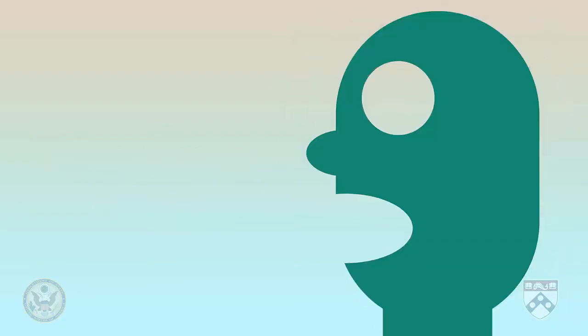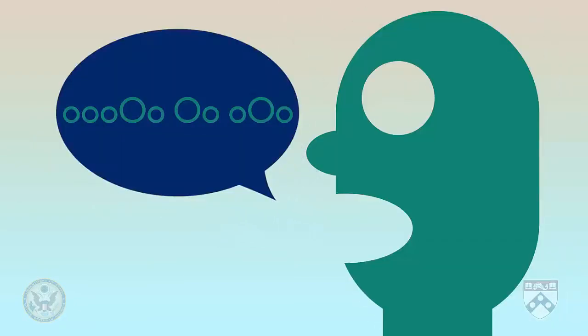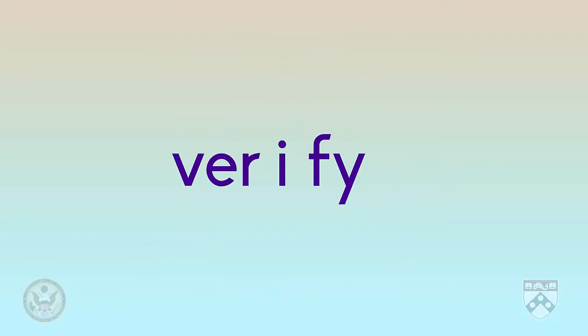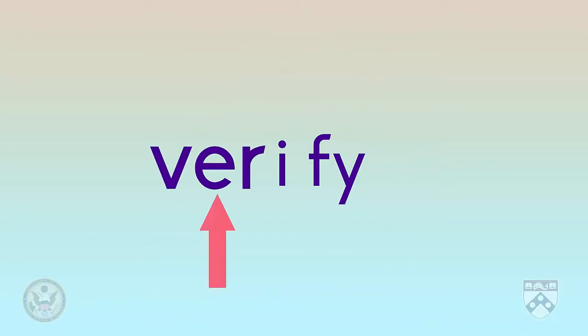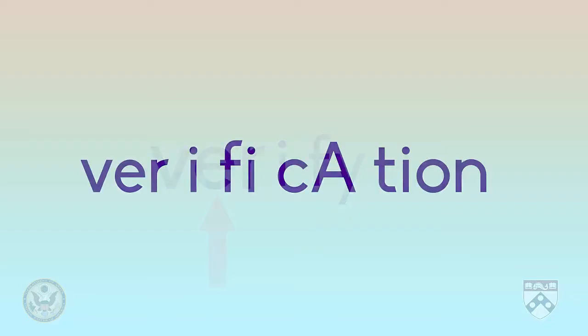One thing to consider when we change word form is that syllable stress can shift. For example, when a word ends in T-I-O-N, the stress falls on the syllable before that ending. Verify has three syllables — ver-i-fy — and the first syllable is the loudest one: VERify. But when we turn it into a noun, there are now five syllables: verification. Because the word ends in T-I-O-N, we know the syllable before the ending will be stressed — the stress falls on 'KA' in veriFIcation. The stress changes because of the word ending: VERify, veriFIcation.